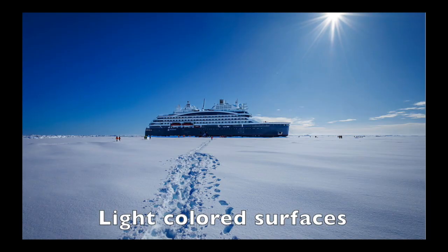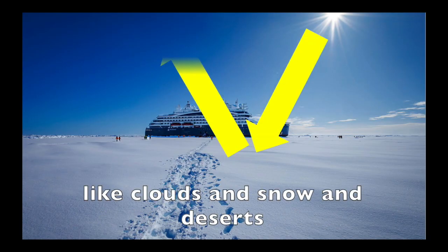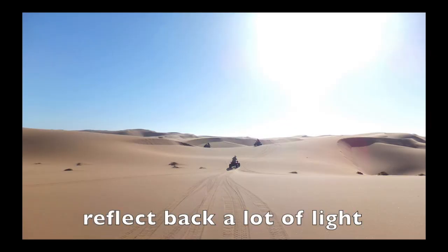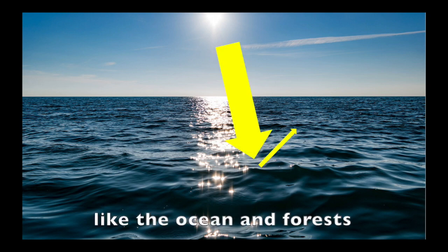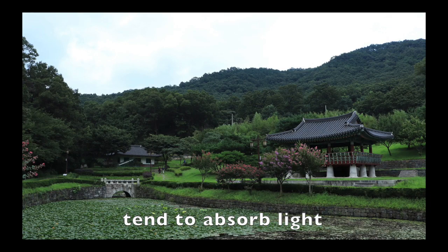The fraction of light reflected by a surface is called albedo. Light colored surfaces, like clouds and snow and deserts, reflect back a lot of light. But dark colored surfaces, like the ocean and forests, tend to absorb light.